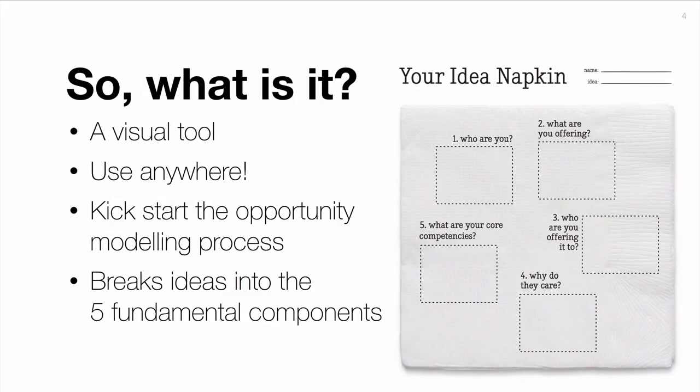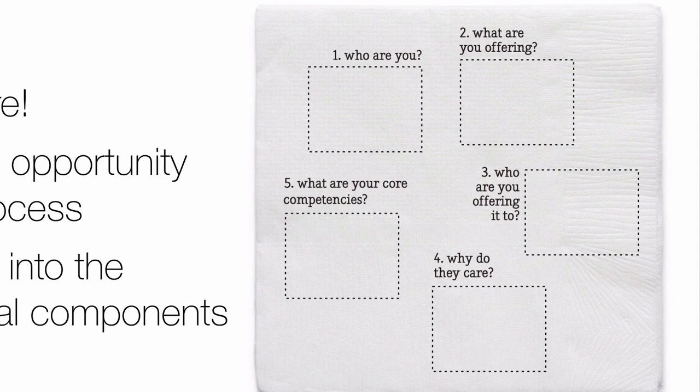The Idea Napkin is a simple visual tool created to help you deliberately design better ideas in any context where innovation happens — whether in a not-for-profit, a classroom, the boardroom, or your own startup. The tool itself is normally a piece of paper that you fill out, freely available from the Unographer website to download, print, or draw yourself. The Napkin is designed to kick-start the opportunity modelling process — improving an idea by breaking it down into five fundamental components you need to consider for a successful project.